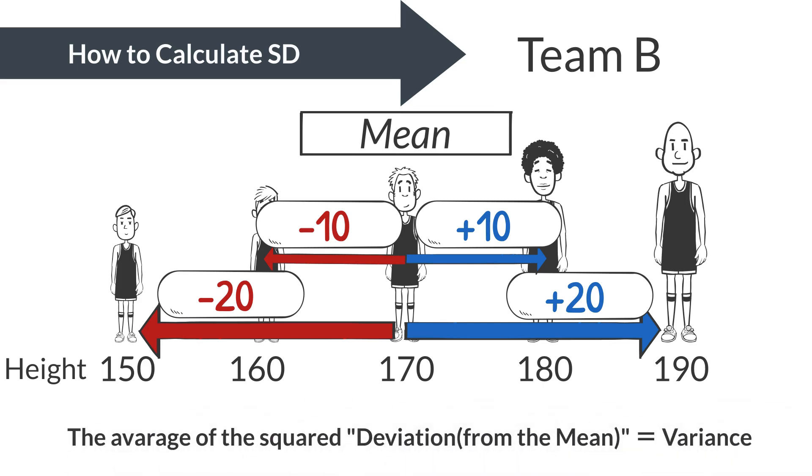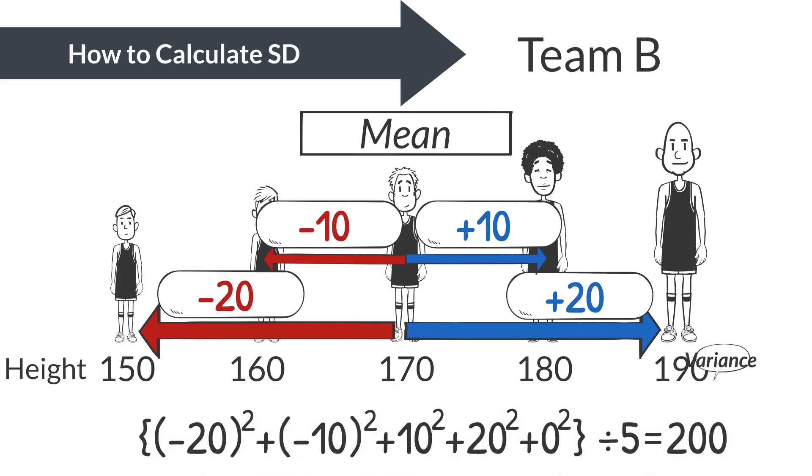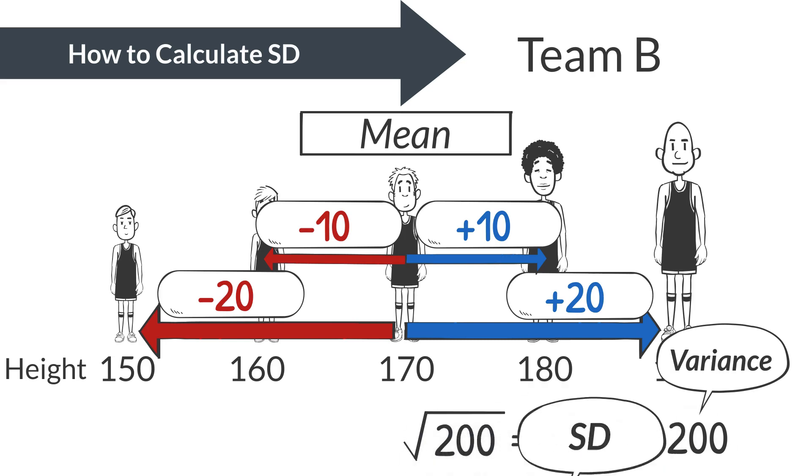Someone exactly at the mean of 170 centimeters has a deviation of zero. Squaring these deviations and averaging them gives us the variance, and the square root of variance is the standard deviation. In our case, the variance turns out to be 200, and the standard deviation is roughly 14 centimeters.